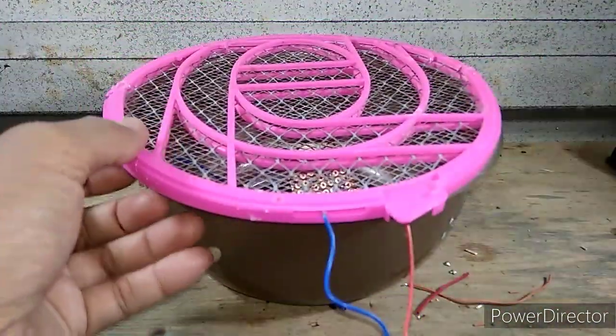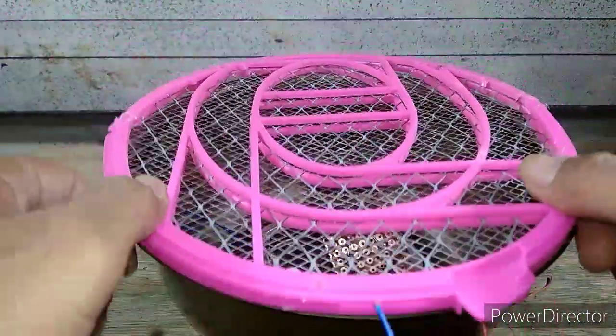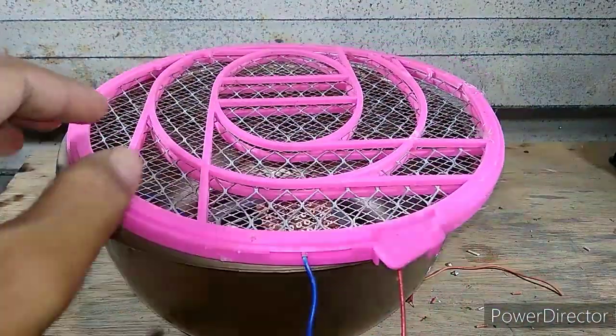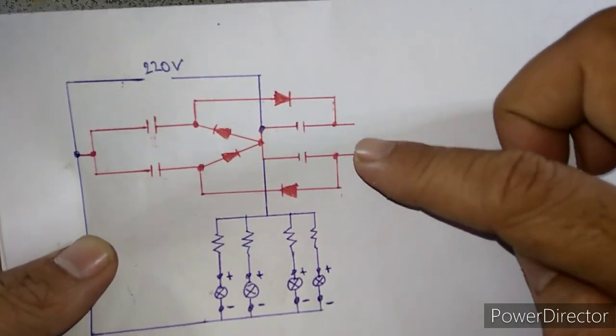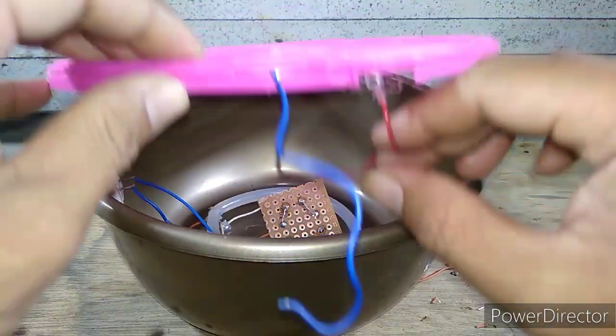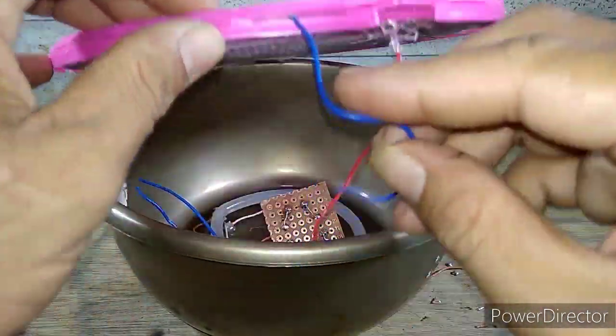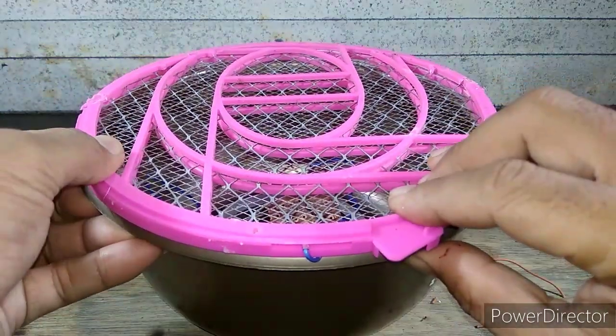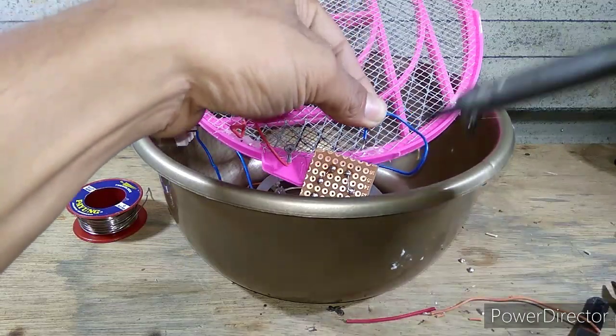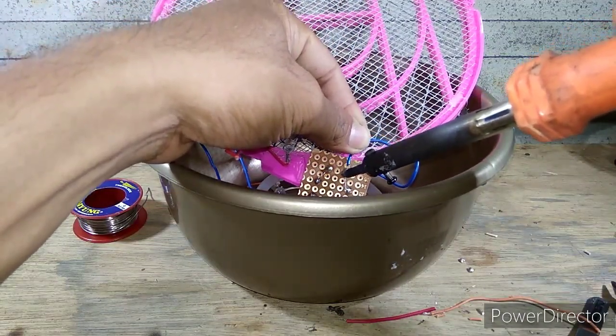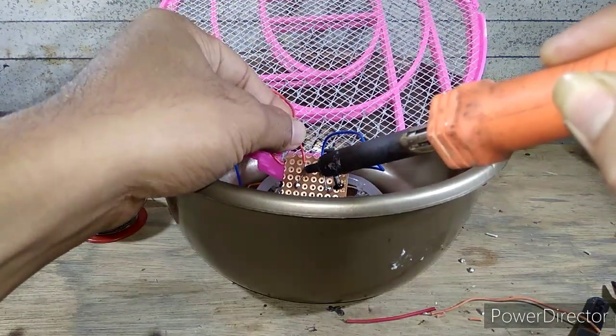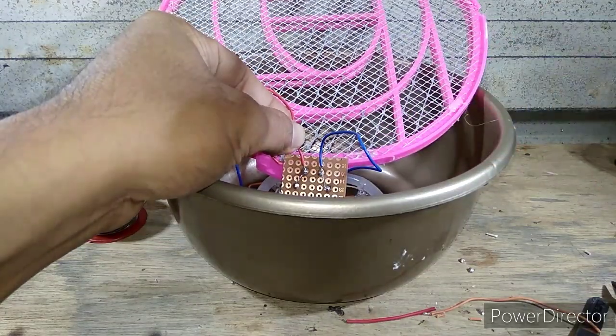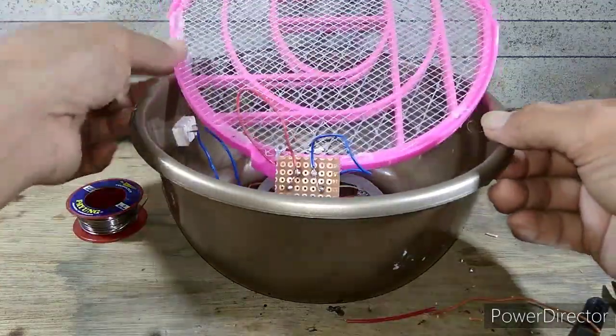Dan untuk kedua jaring raketnya, usahakan jangan sampai menempel. Dan untuk kedua kabelnya, solder ke sebelah sini. Saya solder terlebih dahulu. Oke, seperti ini.